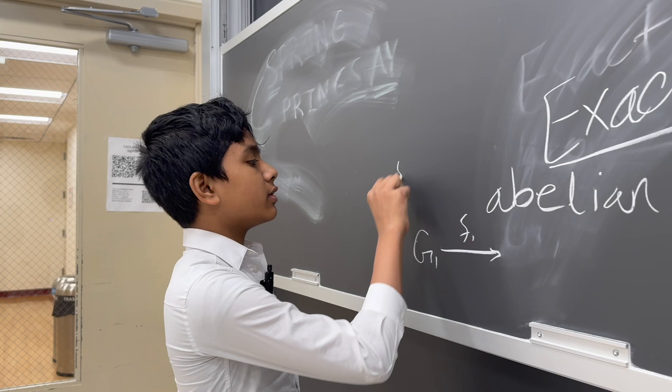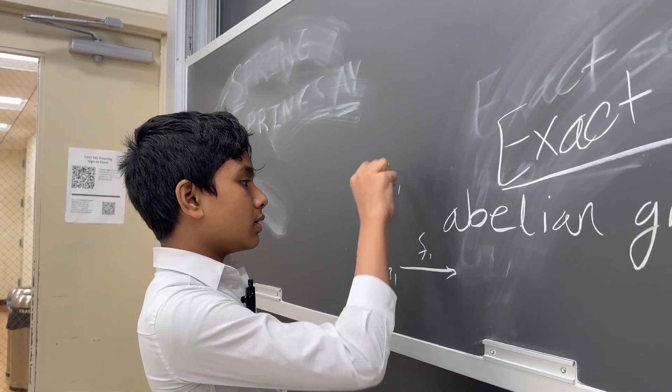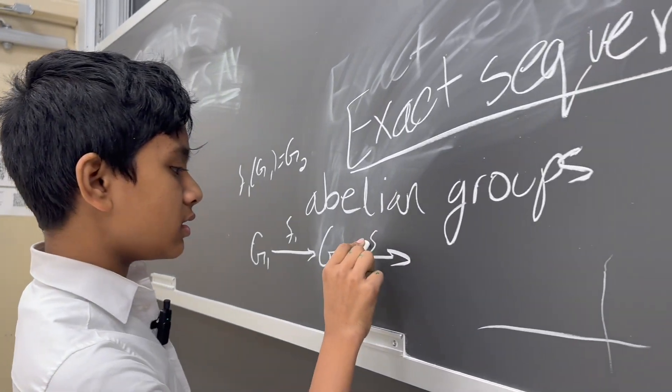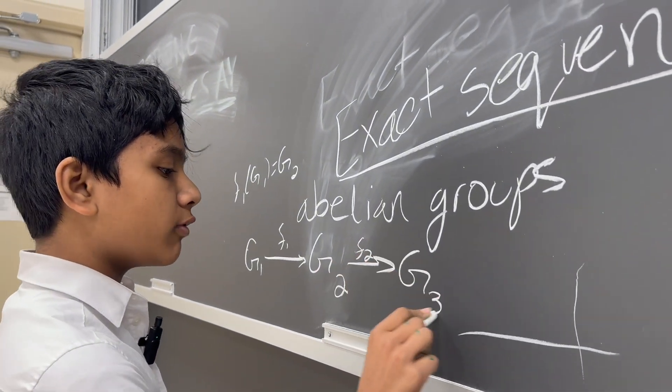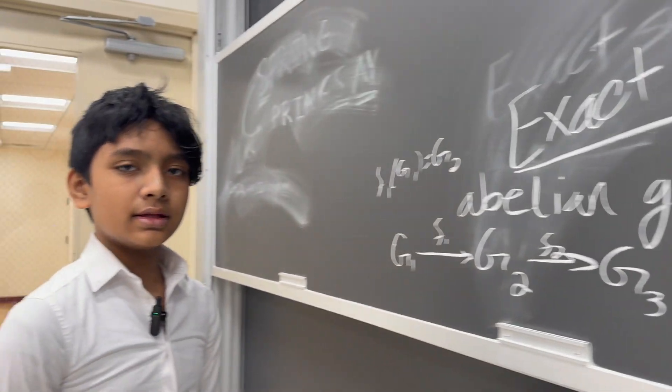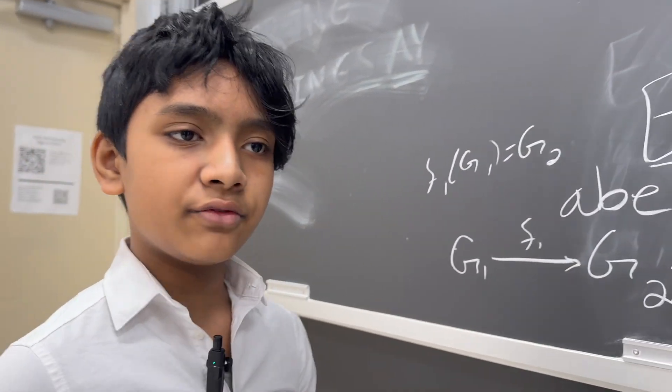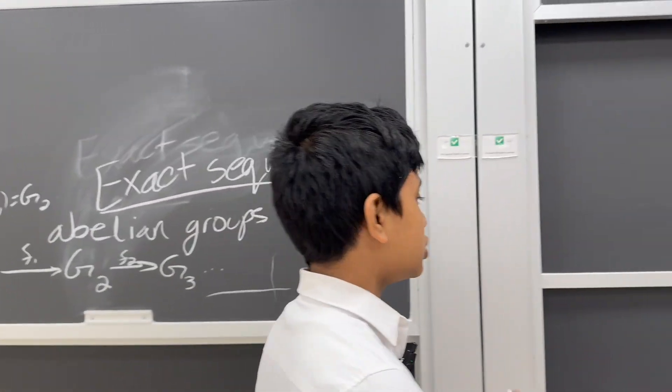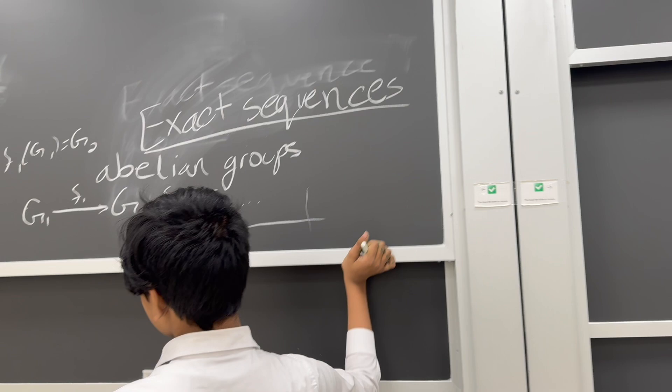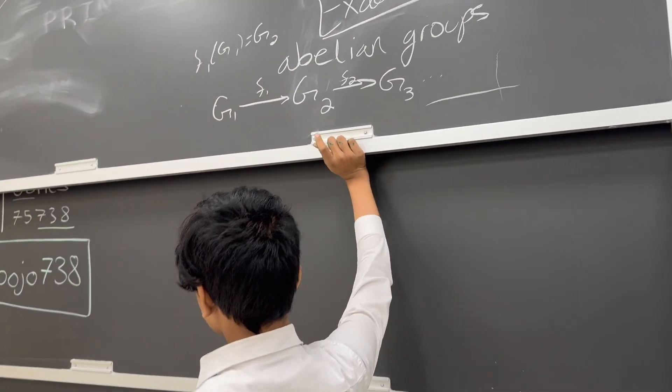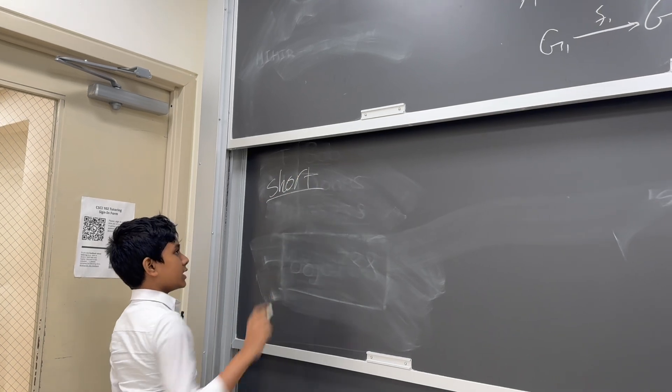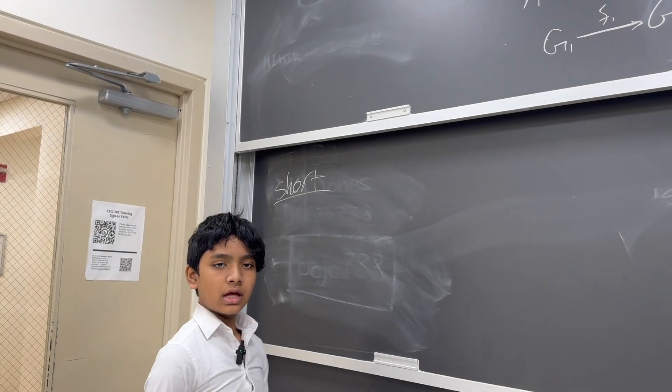So f1 of g1 is equal to g2, and then f2 of g2 equal to g3, and so on and so forth. Now, these can be finite or infinite. Today we're mostly going to be talking about the short version of these exact sequences.